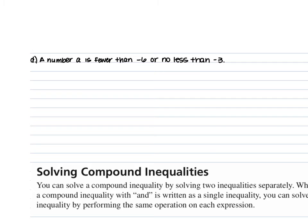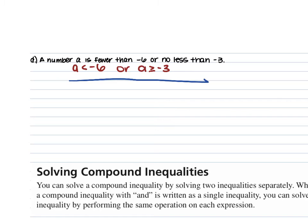For part D, a number a is fewer than negative 6 or no less than negative 3. 'Fewer than' means less than, so a < -6. 'No less than' means greater than or equal to, so a ≥ -3. On the number line, we have an open circle on negative 6 with the line going left, and a closed circle on negative 3 with the line going right.